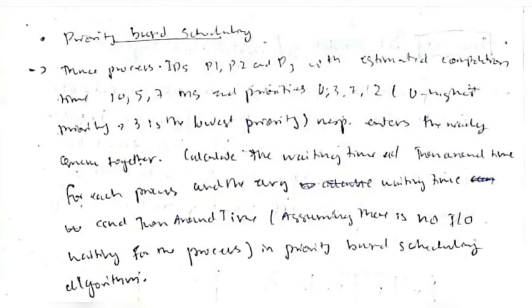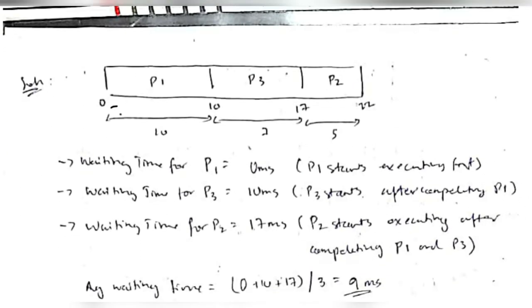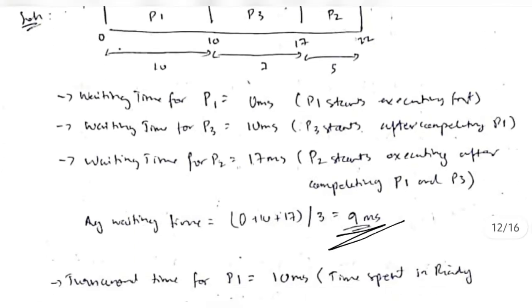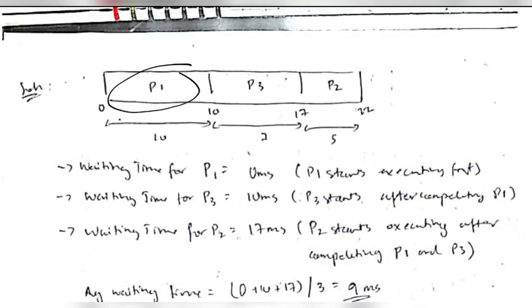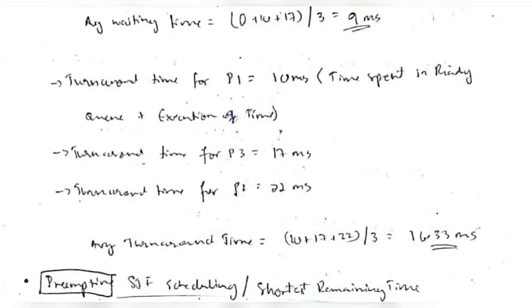Priority-based scheduling (non-preemptive): Priority 0 is highest, priority 3 is lowest. P1 has priority 0, P3 has priority 2, P2 has priority 3. P1 executes first (0–10ms), then P3 (10–17ms), then P2 (17–22ms). Waiting times: P1=0, P3=10, P2=17; average waiting time = (0+10+17)/3 = 9ms. Turnaround time adds execution time to waiting time for each process, divided by 3.